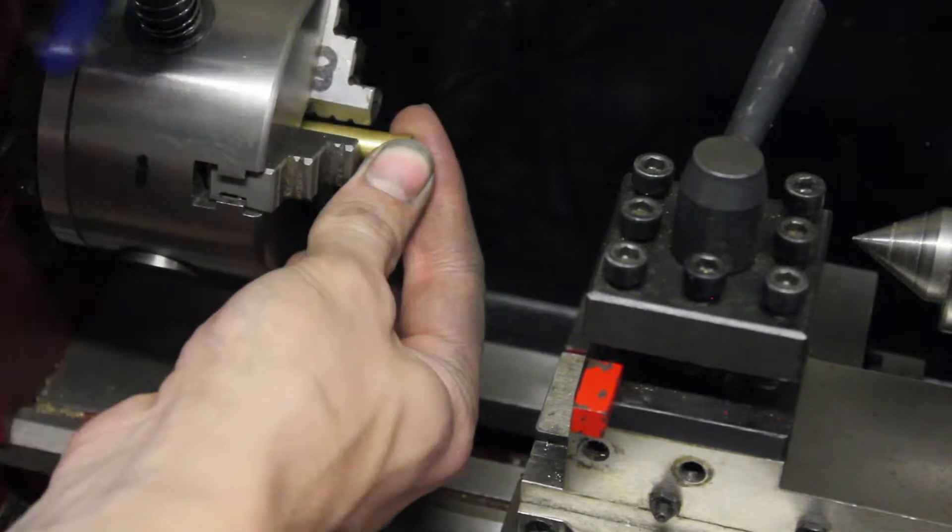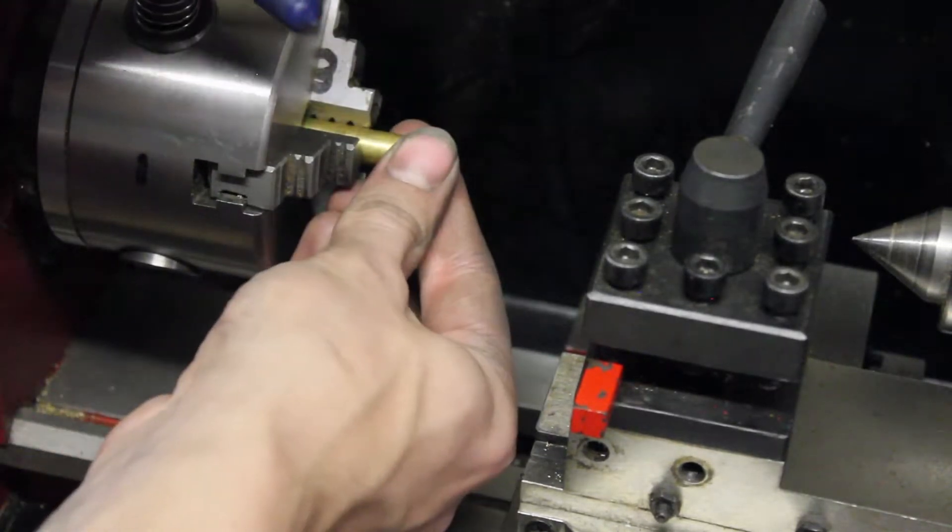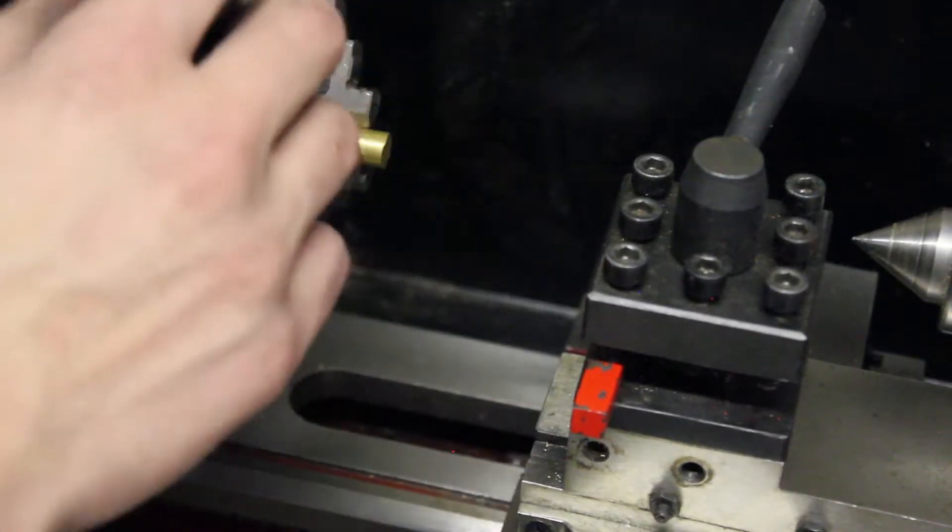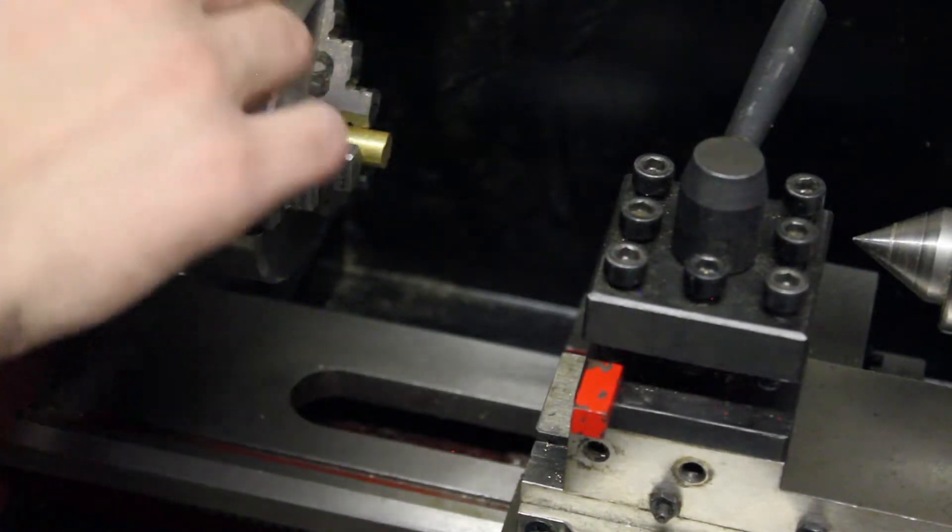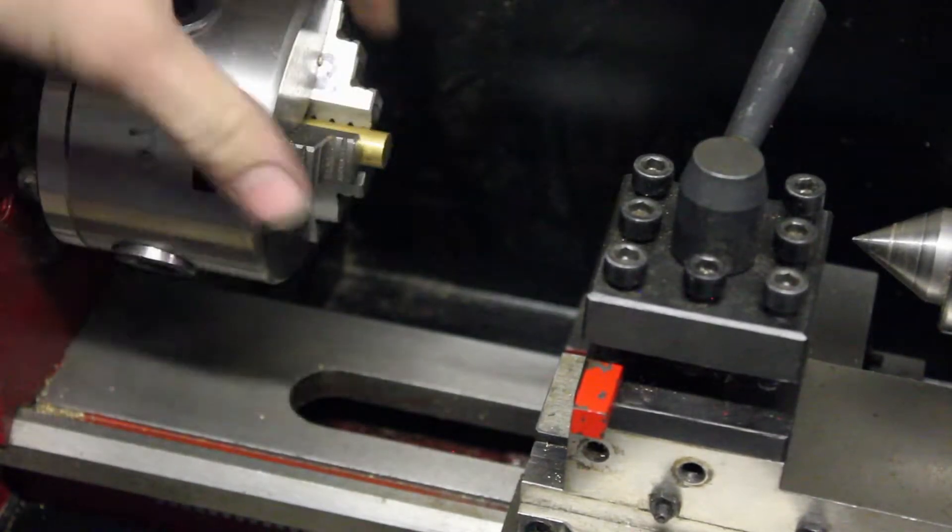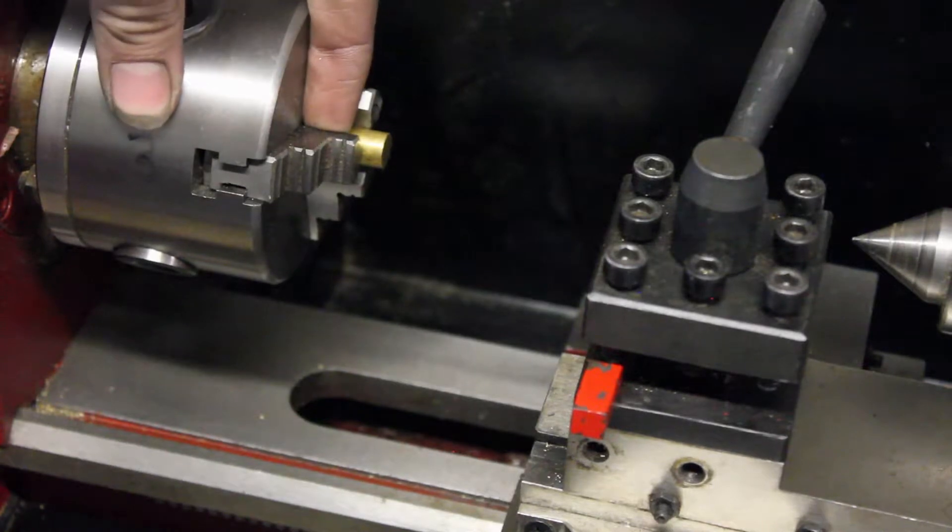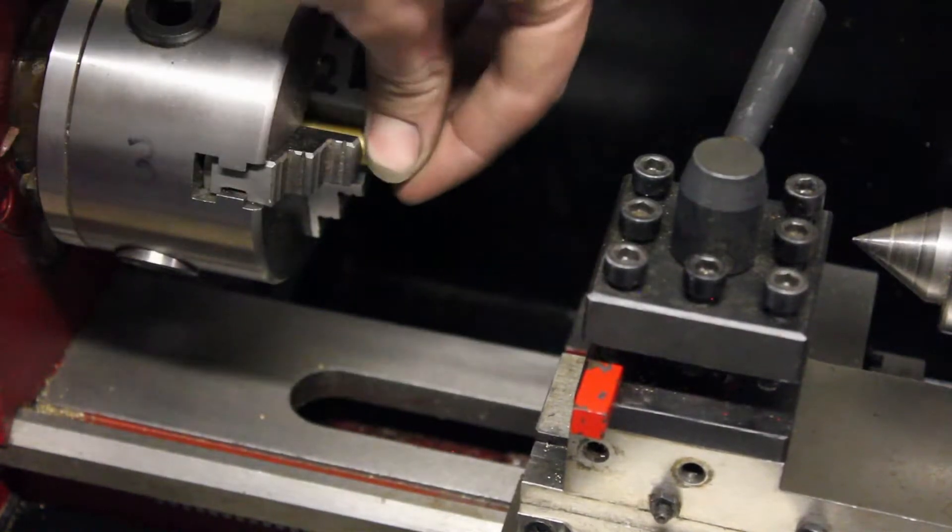And then if you tighten it, then it closes the jaws on your part. And if you give it a little snug torque on there, then it'll clamp your part in there. And now it can't spin or move.